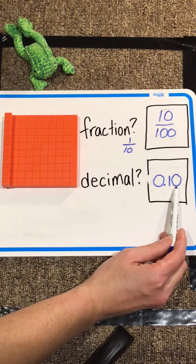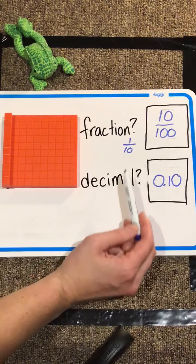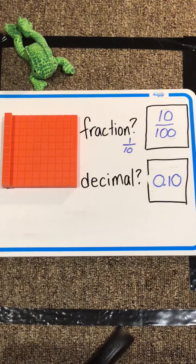So we could still say that this is ten one-hundredths, or we could say it as one-tenth. Either option would be correct.